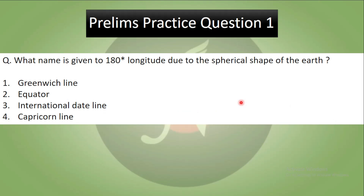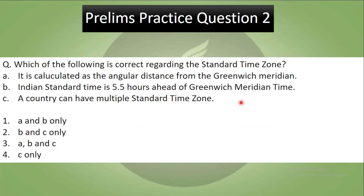Now let's discuss today's prelims practice questions. Question one: What name is given to the 180-degree longitude due to the spherical shape of the Earth — Greenwich Line, Equator, International Date Line, or Capricorn Line? Question two: Which of the following is correct regarding the standard time zone? (A) It is calculated as the angular distance from the Greenwich Meridian. (B) Indian Standard Time is 5.5 hours ahead of Greenwich Mean Time. (C) A country can have multiple standard time zones. This was all about today's video and session. Thank you, and have a nice day.